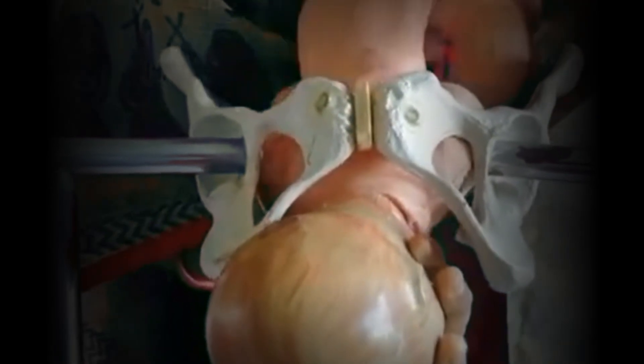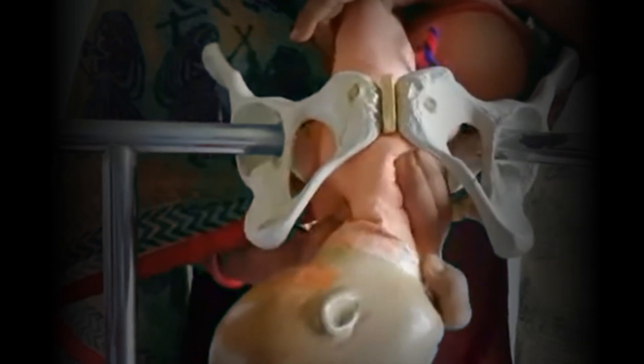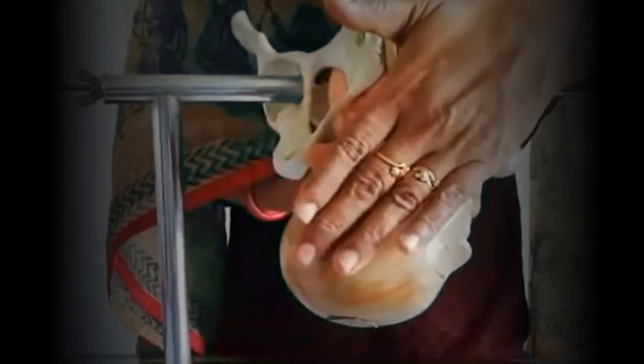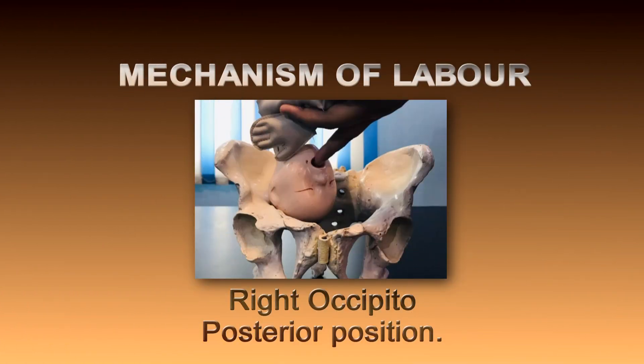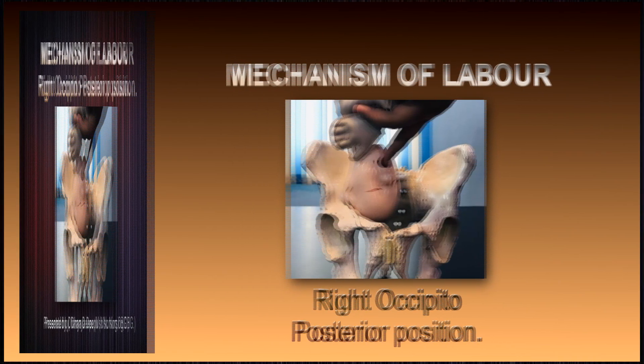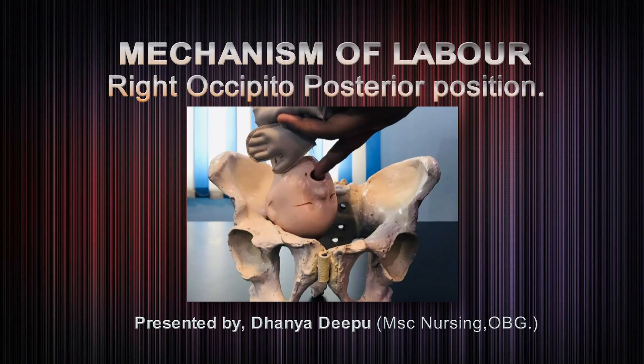The shoulders reach the pelvic floor in the right oblique diameter, then the shoulders rotate forward one-eighth of the circle and come to lie in the anterior-posterior diameter. The head rotates towards the right side of the pelvis; the anterior shoulder comes under the symphysis pubis, and the posterior shoulder sweeps the perineum. Due to lateral flexion, the baby is born onto the mother's abdomen. This is the mechanism that takes place in right occipital posterior. I hope all of you understood — in the next video we will meet with another midwifery topic. Take care, bye bye.